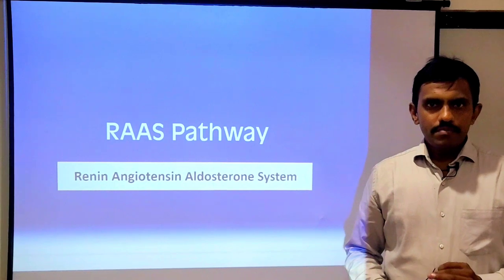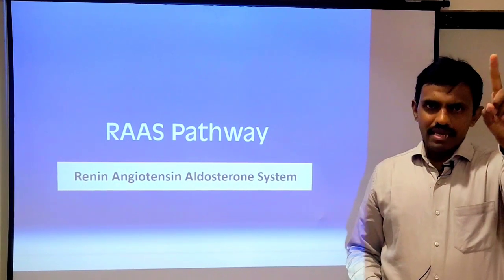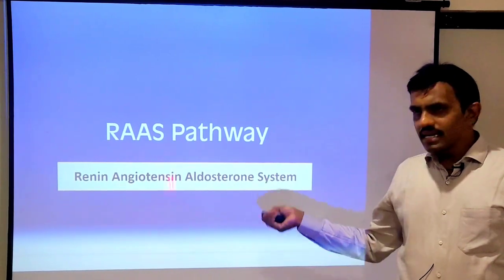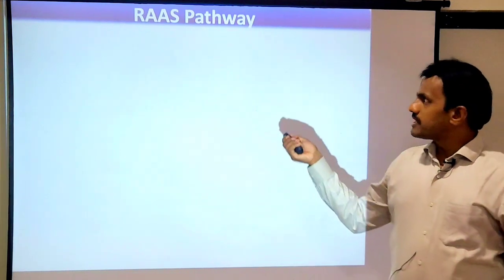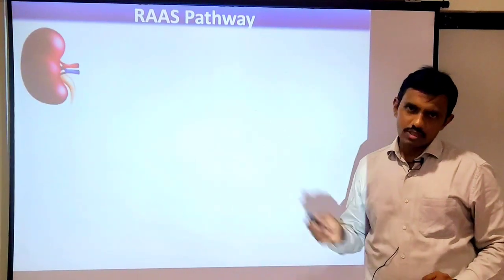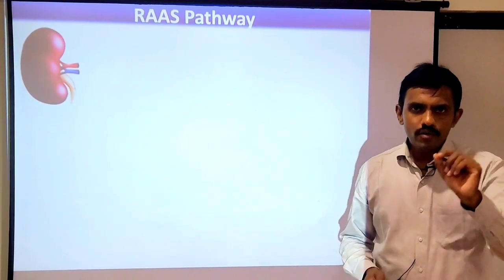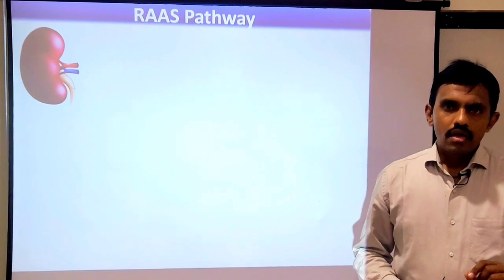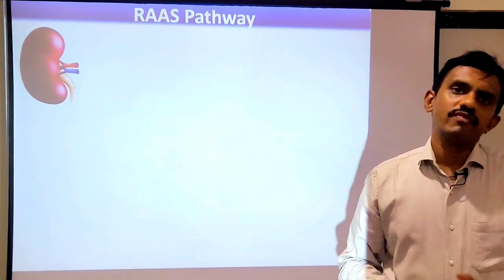Who regulates the BP in our body? One is the brain, another is the kidney. And the kidney regulates the blood pressure with the help of the RAAS pathway. You have to understand how exactly this RAAS pathway functions.